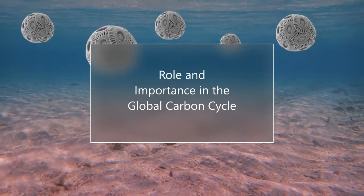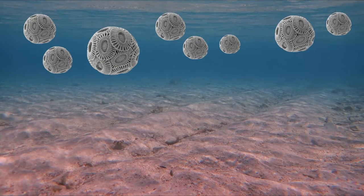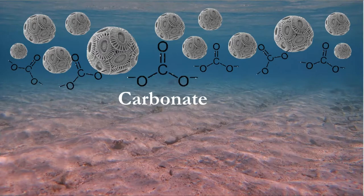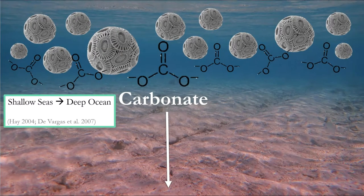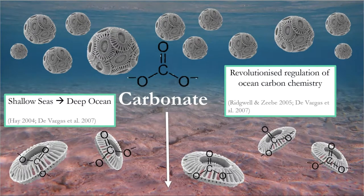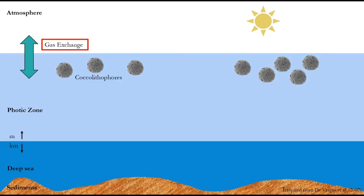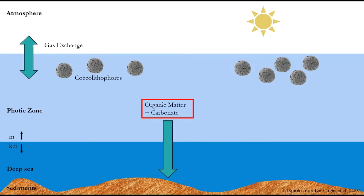In the Cretaceous, when coccolithophores began proliferating in the open oceans, they caused a switch in the major site of global carbonate deposition from shallow seas to the deep ocean for the first time in Earth's history. This revolutionised the regulation of ocean carbon chemistry. Coccolithophores actively participate in gas exchange between seawater and the atmosphere and in the export of organic matter and carbonate to deep oceanic layers and deep sea sediments.